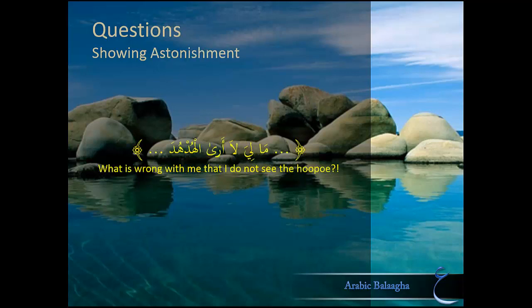The second use of rhetorical questions is to show astonishment. For example, when Sulaiman عليه السلام says مَا لِيَ لَا أَرَى الْهُدْهُدَ أَمْ كَانَ مِنَ الْغَائِبِينَ (Why can't I see Hudhud?), clearly he isn't asking anyone why he can't see the bird; rather he's expressing astonishment that Hudhud seems to have disappeared without permission, whereas whenever he does disappear it's usually with permission.